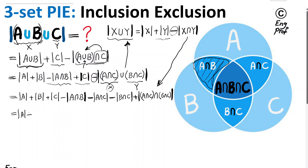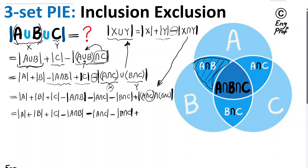Keeping all the terms together: cardinality of A, plus cardinality of B, plus cardinality of C, minus cardinality of A intersect B, minus cardinality of A intersect C, minus cardinality of B intersect C, and finally plus cardinality of A intersect B intersect C. Using the associative property — since only one operation (intersect) is involved — we can write A intersect C and B intersect C combined as just one intersect C, giving A intersect B intersect C.